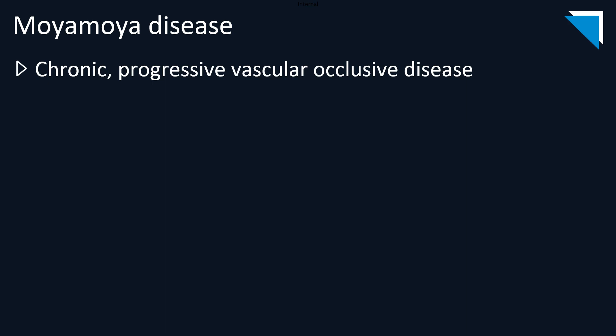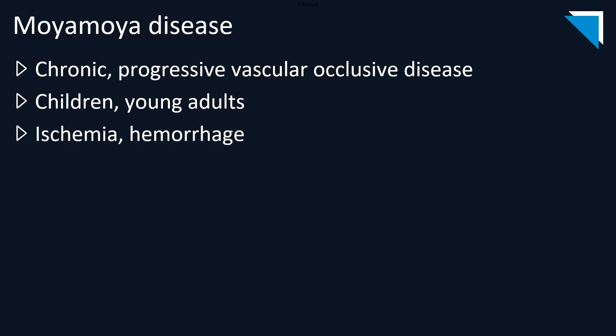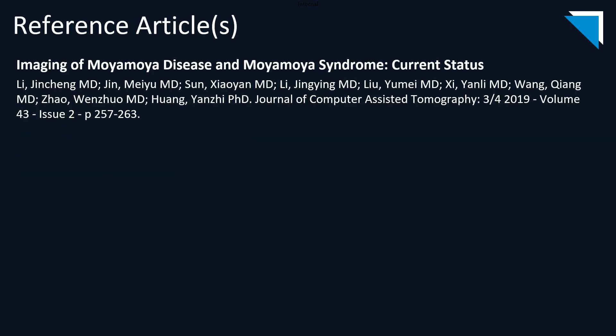Moyamoya disease is chronic and progressive, and most commonly presents in children and young adults. The age distribution for Moyamoya syndrome is much larger owing to the multitude of underlying causes. Patients frequently present with findings of ischemia and/or hemorrhage, and the mainstays of treatment include bypassing or re-canalyzing the occluded segments. This article from the Journal of Computer Assisted Tomography gives a nice overview of both Moyamoya disease and Moyamoya syndrome.